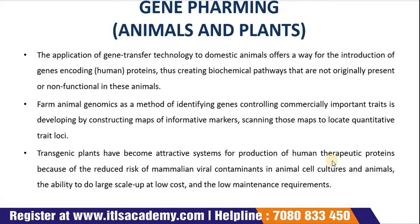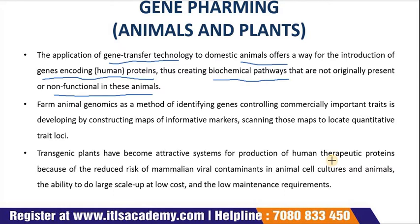Gene farming includes both transgenic animals and plants. The application of gene transfer technology to domestic animals offers a way for the introduction of genes encoding human proteins, thus creating biochemical pathways that are not originally present or non-functional in these animals. This provides a mechanism for producing therapeutic proteins and for the modification of production characteristics. Efforts to introduce specific characteristics involve the integration of additional with existing biochemical pathways, and homeostasis requires higher levels of transcriptional and translational controls.